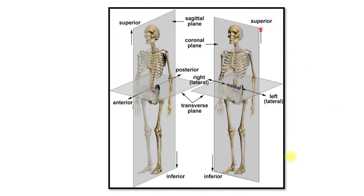Talking about planes: the mid-sagittal or median plane passes through the midline of the body, dividing it into equal right and left halves — in some books also called the sagittal plane. The coronal plane passes perpendicular to the mid-sagittal plane and divides the body into anterior and posterior halves. The transverse plane divides the body into upper and lower halves.